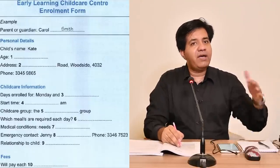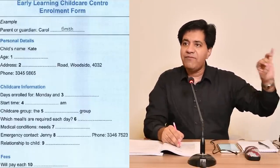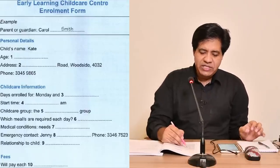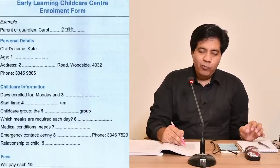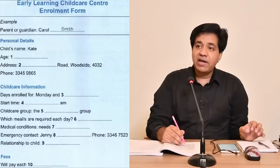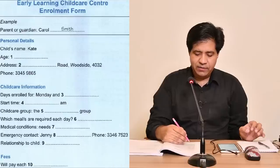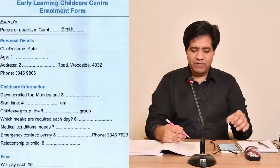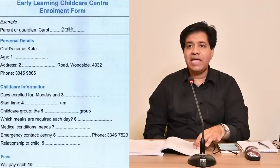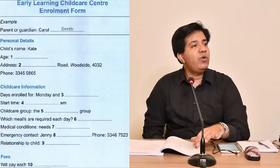The example has been removed now — audio will start directly without any example. You can see the headings: Personal Details is the first one, Child Care Information is the second heading, and Fees is the third heading. In Personal Details, the child's name Kate is already mentioned, and the age is what you need to find in the audio.